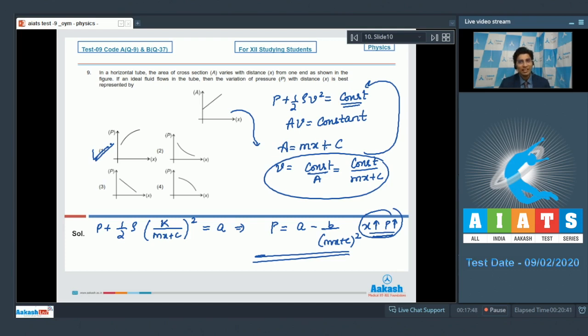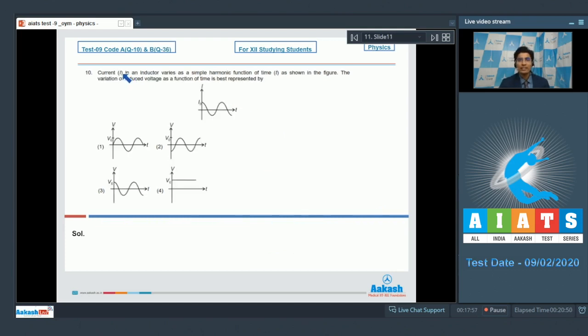Now let us proceed to question number 10. Question 10 says, current i in an inductor varies as simple harmonic function of time t as shown in the figure. However, the variation of induced voltage as a function of time is best represented by.